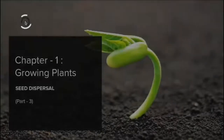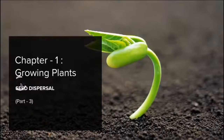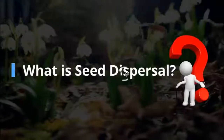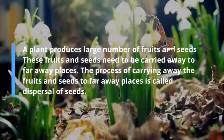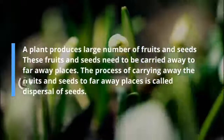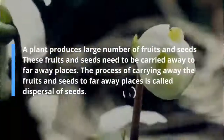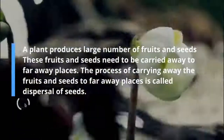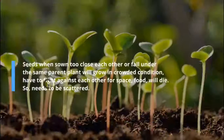Children, now you all must be aware about the germination process. Let's move on to the next topic, that is seed dispersal. What is it? A plant produces a large number of fruits and seeds. These fruits and seeds need to be carried away to far away places. The process of carrying away the fruits and seeds to far away places is called dispersal of seeds.